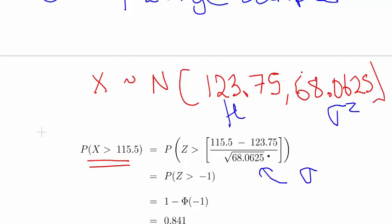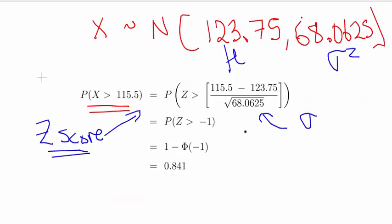So essentially this resolves into a z-score calculation. If you're not familiar with z-scores and all that sort of stuff, I suggest you deal with that first and come back to that. But essentially we should end up with probability of a Z being greater than 115.5 minus 123.75 divided by the square root of 68.0625. And it should get an answer, a z-score of close to minus 1, probability of Z being greater than minus 1, which is 1 minus phi of minus 1. You should get an answer there close to 0.841.